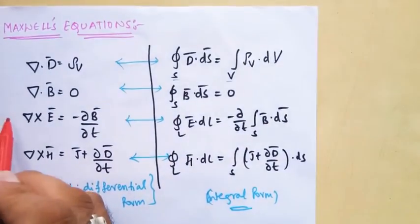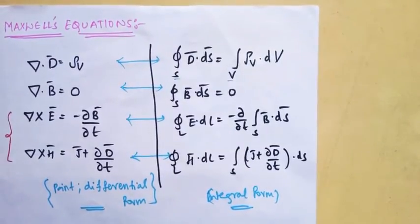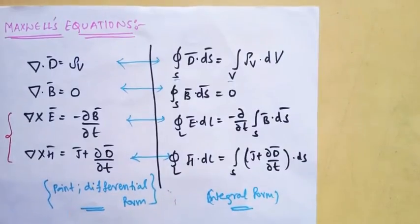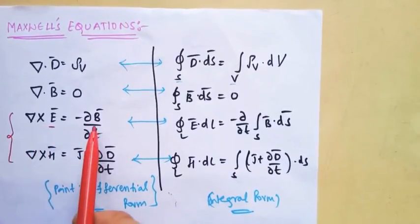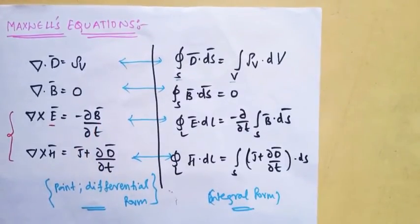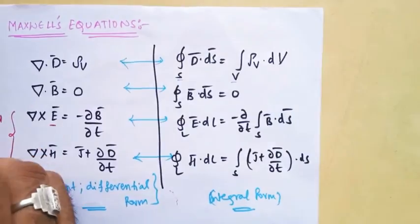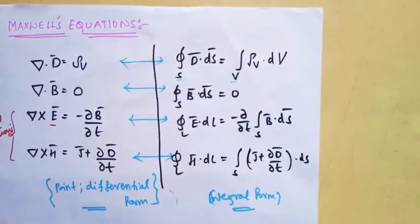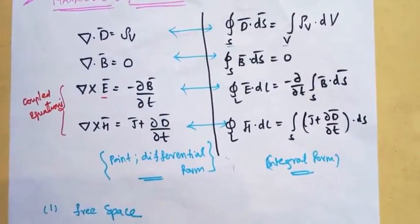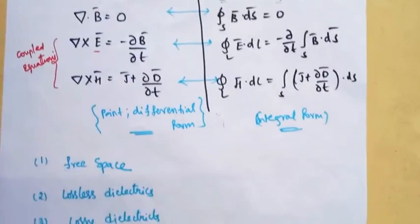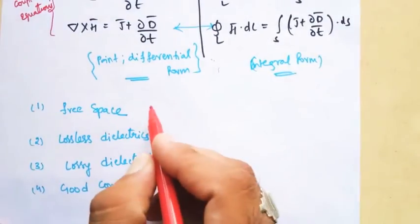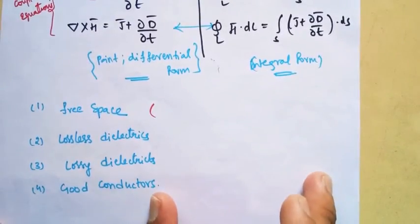If you clearly observe, these two equations we will use — these are called coupled equations because on the left-hand side we have the equation in the form of electric field, whereas on the right-hand side we have it in the form of magnetic field. Since both sides are not the same, these are called coupled equations. We will apply certain mathematical manipulations to decouple them into electric field on both sides, and similarly magnetic field on both sides. Before that, I want to give the conditions for how we substitute into the equations for all four cases.